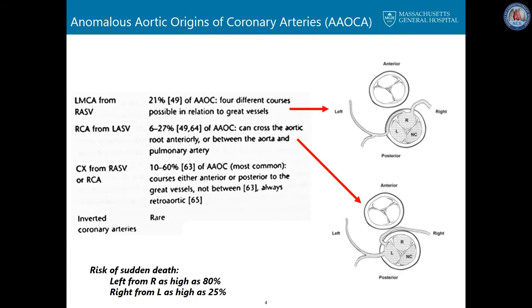The right coronary artery arises from the left sinus in about 6 to 27 percent, depending on the series, of anomalous aortic origin. That artery can cross the aortic root anteriorly or between the aorta and the pulmonary artery. Anomalous origin of the circumflex from the right coronary artery or the right sinus occurs in about 10 to 60 percent, and in some series is the most common. Inverted coronary arteries are rare.